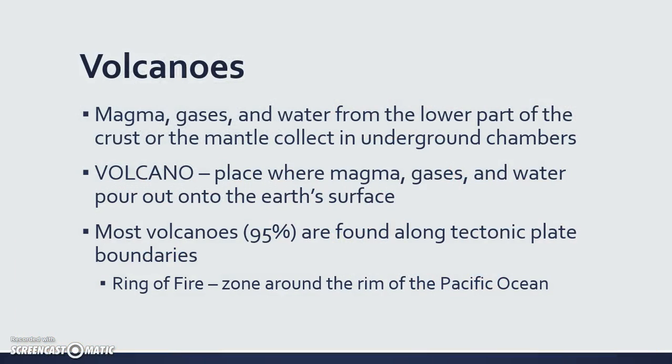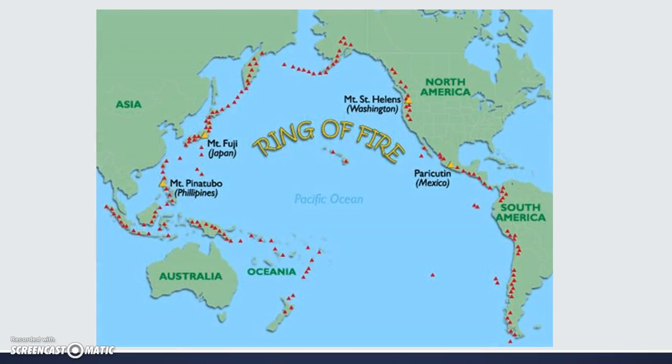Volcanoes are magma, gases, and water from the lower part of the crust that have accumulated in underground chambers. The volcano is the place where the magma, gases, and water pour out of the earth's surface. Most volcanoes — actually 95% of them — are found along the tectonic plate boundaries, and those boundaries are called the ring of fire. That's the zone around the rim of the Pacific Ocean where all these volcanoes and faults are located. Here is a diagram of the ring of fire — where all the little red triangles are, those are volcanoes, and underneath those are tectonic plate boundaries.